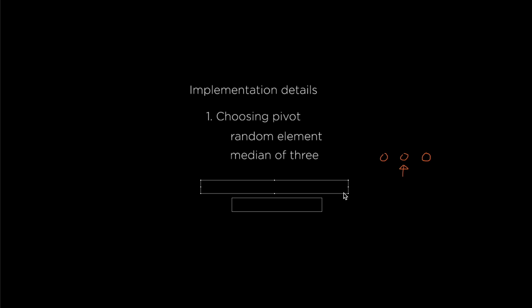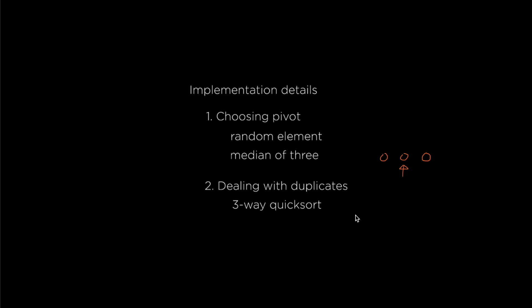The second thing is dealing with duplicates. As we saw, quicksort doesn't perform well when there are a lot of duplicates. One way to handle this is called three-way quicksort. Instead of dividing the array into two groups, you divide it into three: numbers less than the pivot, numbers equal to the pivot, and numbers greater than the pivot. I'll put a link to a page with more info about it in the description below.